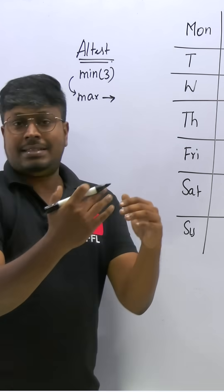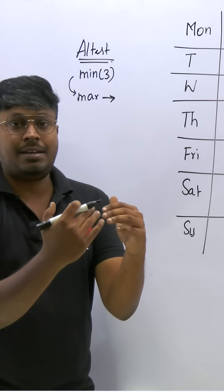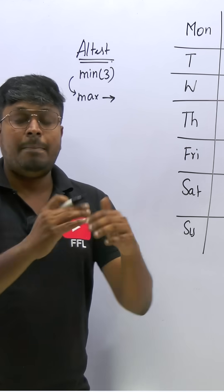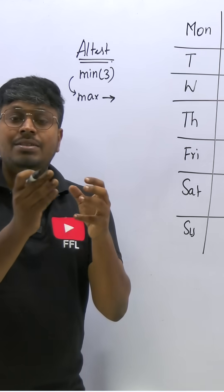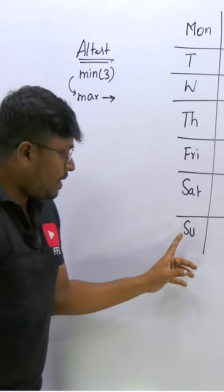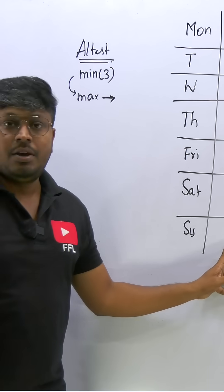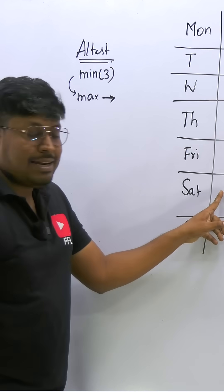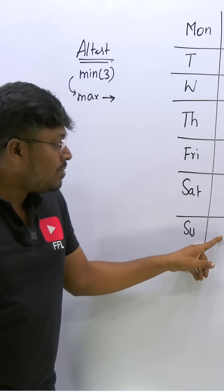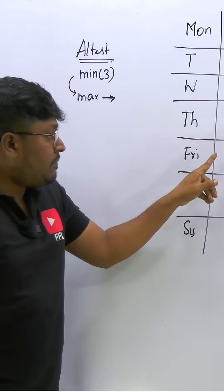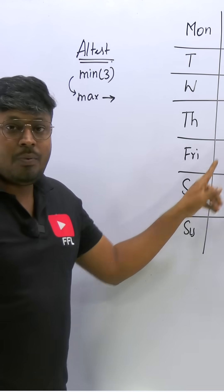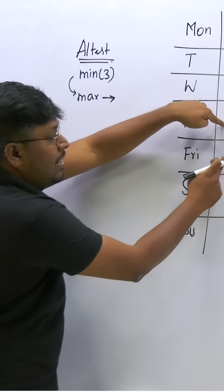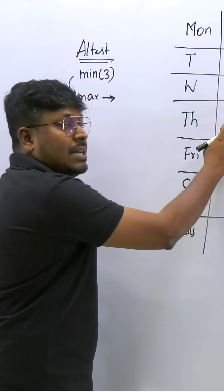English is taught before three subjects means minimum three — or before four subjects, or before five subjects, because that is called 'at least.' If I fix English on Sunday, that is not possible because no subject is taught before English. If I fix English on Saturday, only one subject is taught before it. If I fix English on Friday, only two subjects are taught before it.